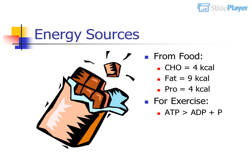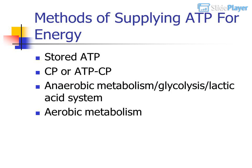For exercise, ATP breaks down into ADP plus phosphate (ATP → ADP + P). Methods of supplying ATP for energy.